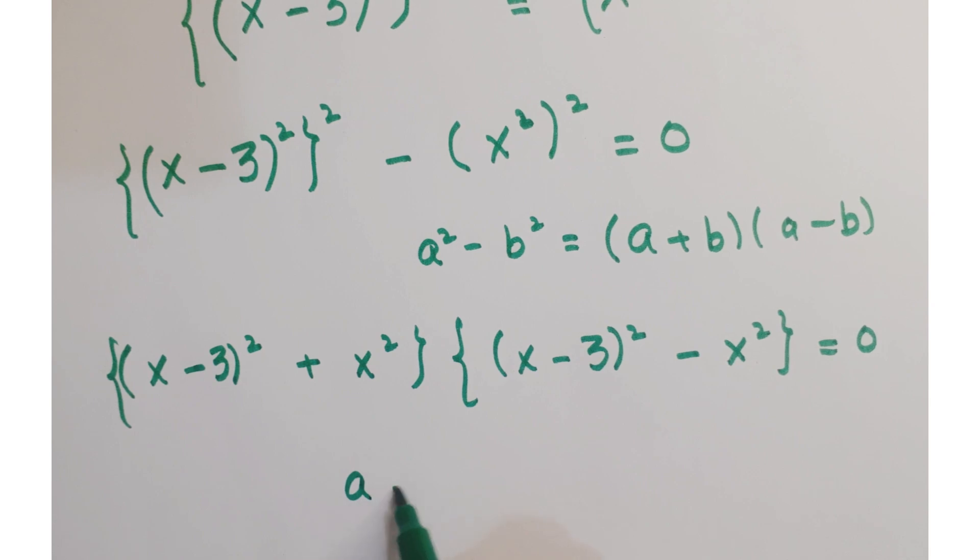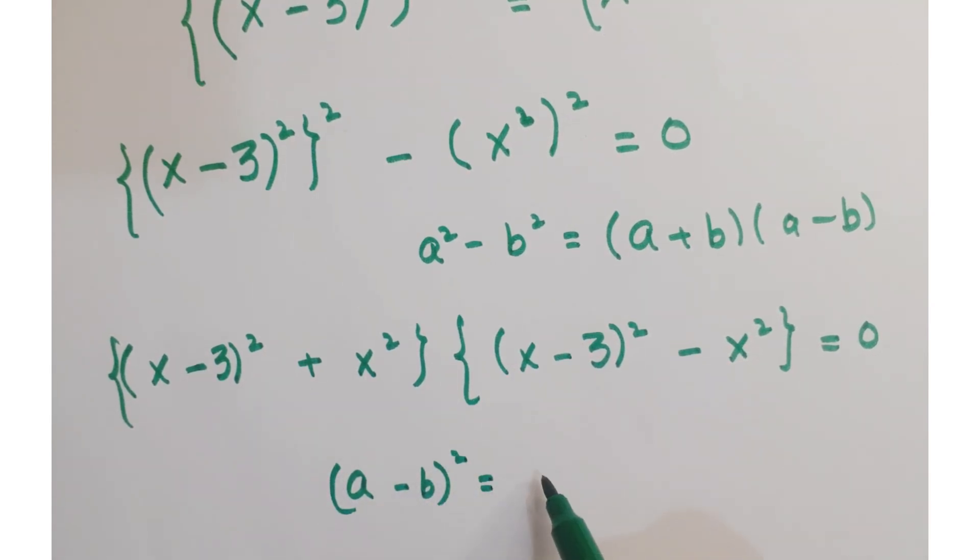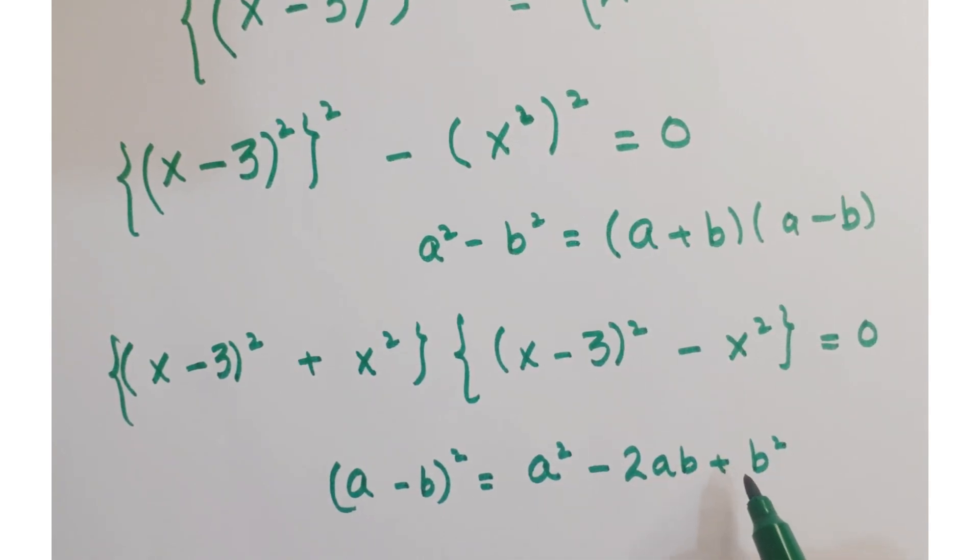As you know the identity a minus b whole square is equal to a square minus 2ab plus b square. Applying this identity,